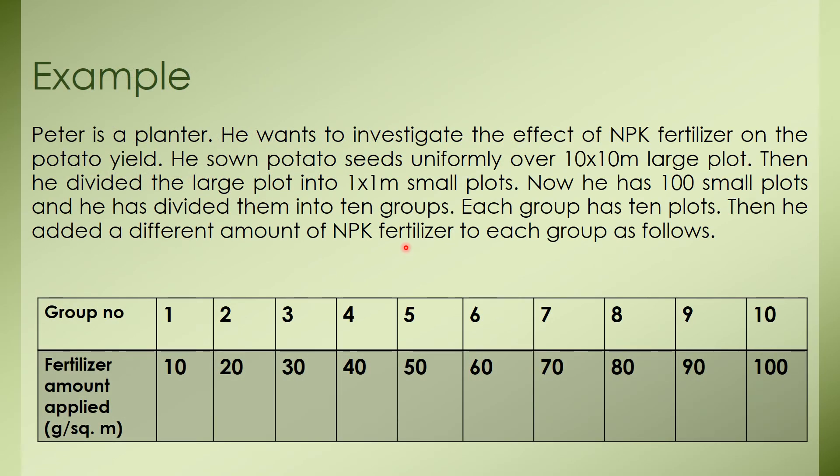Now I am going to explain the effect of predictive variable on response variable using a small example. Peter is a planter. He wants to investigate the effect of fertilizer on the potato yield. So he sown potato seeds uniformly over 10 by 10 meter large plot. Then he divided the large plot into 1 by 1 meter small plots. Now he has 100 small plots. And he has divided them into 10 groups. So each group has 10 plots. Then he added a different amount of NPK fertilizer to each group as follows. So the first row shows you the group number and the second row shows you the fertilizer amount he added to each group.